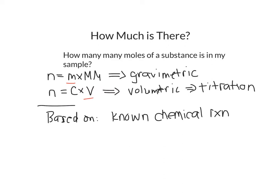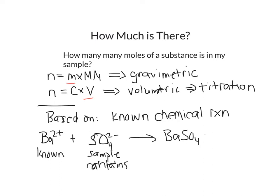So for instance, if I was doing a gravimetric analysis and I wanted to know the amount of sulfate in a sample, I might imagine adding something that contains barium 2+. So I would have a known barium 2+ added to my sample which contains the sulfate. And when I do that, I know that this ionic reaction results in solid barium sulfate. And so I could isolate and weigh this product and find its mass.